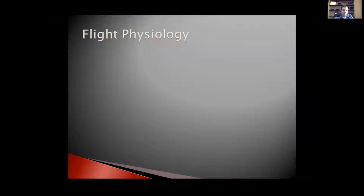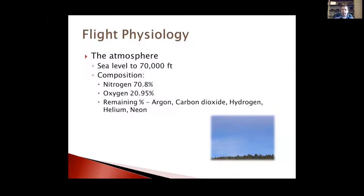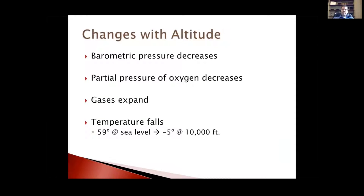Moving to flight physiology: our atmosphere extends to about 70,000 feet. Nitrogen makes up about 78% of air and oxygen roughly 21%, with small amounts of other gases. As altitude increases: barometric pressure decreases, the partial pressure of oxygen decreases, gases expand, and temperature falls. For approximately every 2,000 feet gained, temperature drops about one degree Celsius.